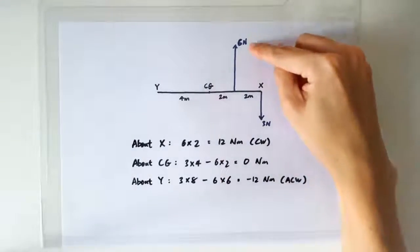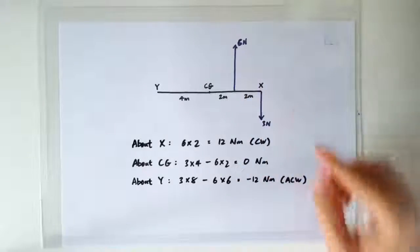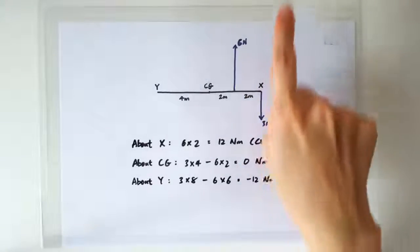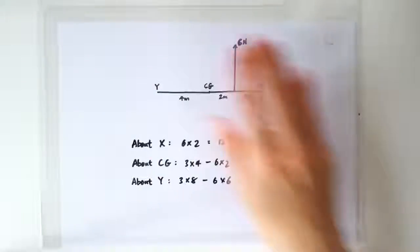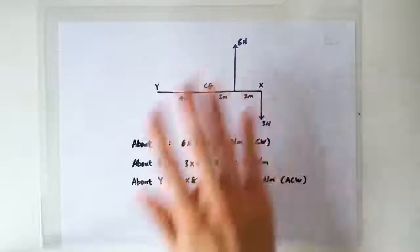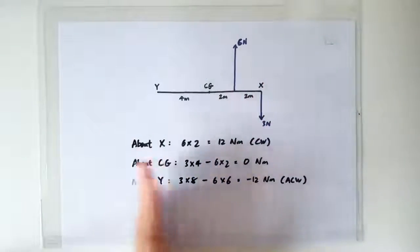When we increase one of the forces to 6 newtons, then net force is no longer 0. In fact, we have a net force of 3 newtons up. So if net force is not 0, then depending on where you choose your pivot point to be, the net moment will be calculated to be a different value.